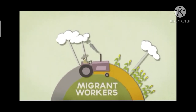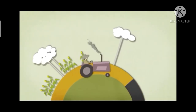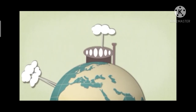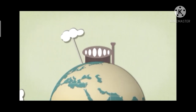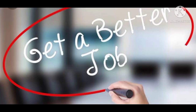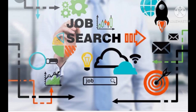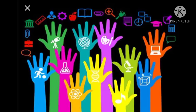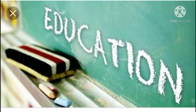Migration can be divided into two heads: voluntary migration and forced migration. Voluntary migration is when people move and are attracted to pull factors — for better jobs, educational opportunities, or to be close to their family or friends in another village, town, city, state, or country. When people move of their own will and choice, it is called voluntary migration.